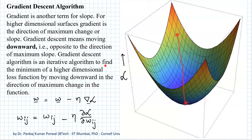This approach is called gradient descent — we move downward in the direction of maximum slope. Gradient descent is an iterative algorithm to find the minimum of a higher-dimensional loss function by moving downward in the direction of maximum change. The update equation for the weight vector is: w_new = w_old − η∇L, where ∇L is the gradient of the loss function. For each component w_ij, the updated weight equals the old weight minus the learning rate times the partial derivative of the loss function in the direction of w_ij.